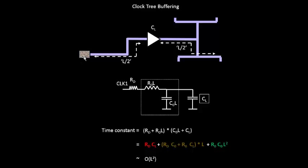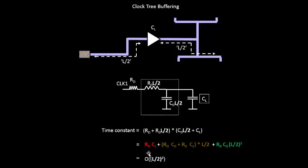The length of the wire is L/2. This still holds good for your driver resistance and load. For this particular section of the wire, this will become your driver and this will become the load. So in this model we will replace all L by L/2. In the equation also we will do the same — replace everything by L/2. So now the time constant, or the time required to charge this load capacitance, is proportional to L²/4. The L² term is still there but it is divided by 4, so we have gained some benefit.